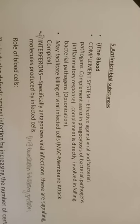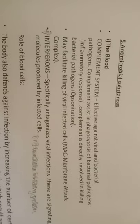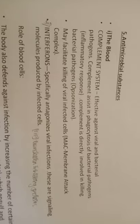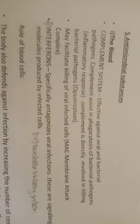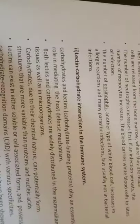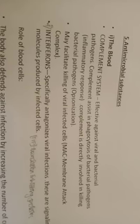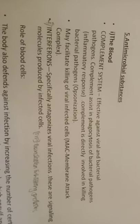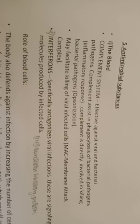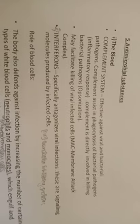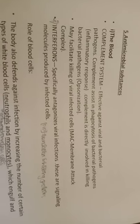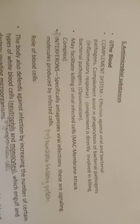Now let's talk about antimicrobial substances. We have covered physical/anatomical barrier, physiological barrier, endocytic and phagocytic barrier, and inflammatory barrier. There are two main antimicrobial substances: blood and lectin-carbohydrate interaction. In the blood, the complement system is effective against viral and bacterial pathogens. Complement assists in phagocytosis of bacterial pathogens, is directly involved in killing, and forms a membrane attack complex.